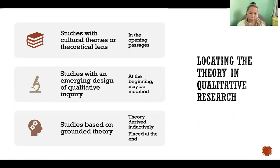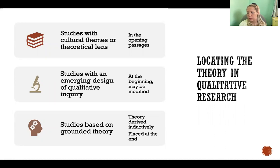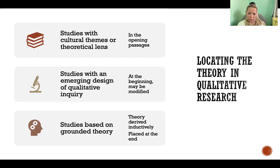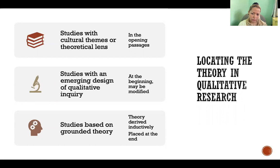In a study with an emerging design or qualitative inquiry, the theory would also appear at the beginning, but you're more likely to see some variation of the theory — one with a specific twist related to the phenomenon or topic being studied. In a study based on grounded theory, the study is actually producing the theory, so the theory is derived inductively. Rather than building the study around a theory, the theory is built around the study, and would be written about at the end.